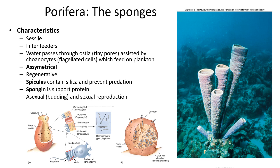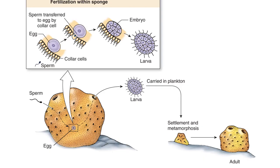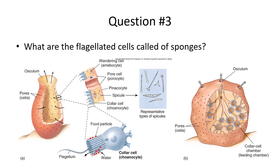Sponges can also reproduce sexually and have a free-living larva that swims around and then finds a spot to settle. Here's the life cycle: eggs are produced inside, sperm are released by another sponge elsewhere, enter and fertilize the egg, which turns into a larva, finds a spot, settles down, and becomes a full-grown sponge.